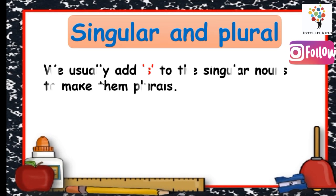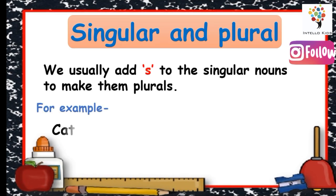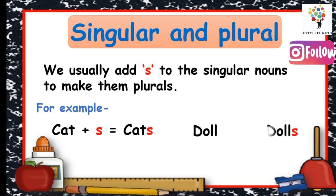Let's learn how we can make singular to plural. We usually add S to the singular nouns to make them plurals. For example, cat plus S equals cats. Doll plus S equals dolls.